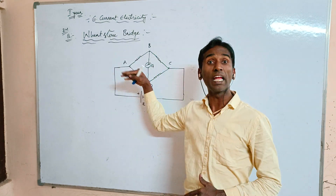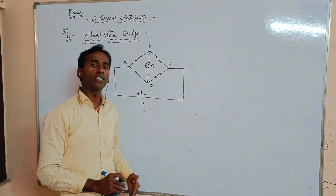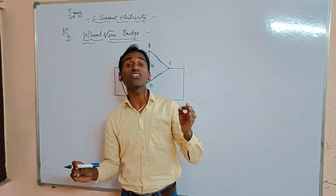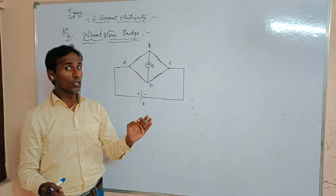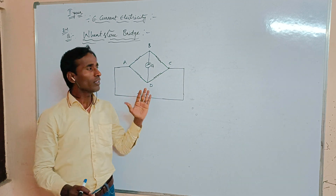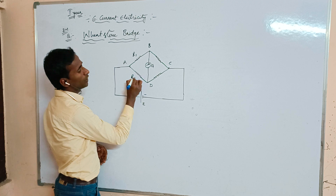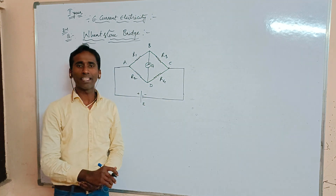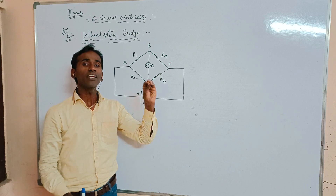First of all, why we are using the Wheatstone bridge? The Wheatstone bridge is an electric circuit which can compare resistances, and which is used to find the unknown resistance of the Wheatstone bridge. We are taking here four types of resistances: R1, R2, R3, and R4. These four resistances can be referred to as the arms of the bridge.